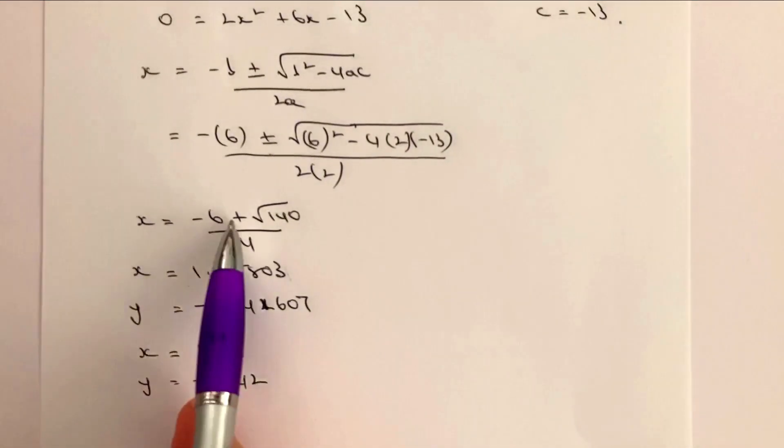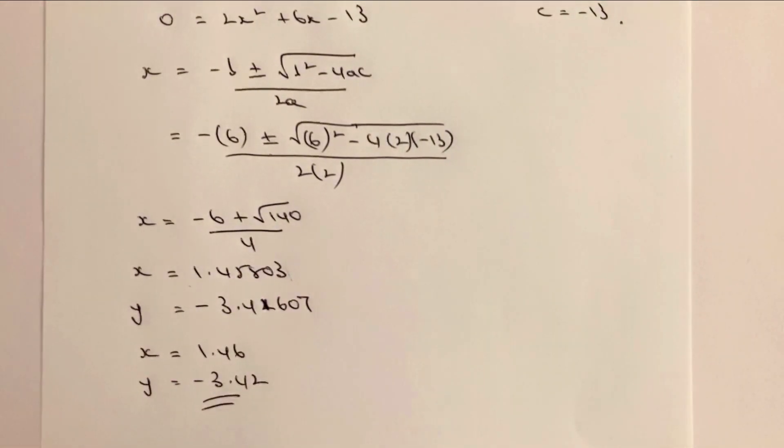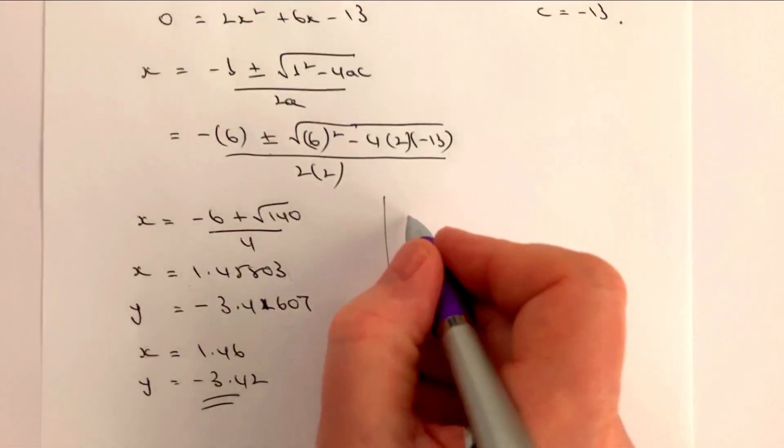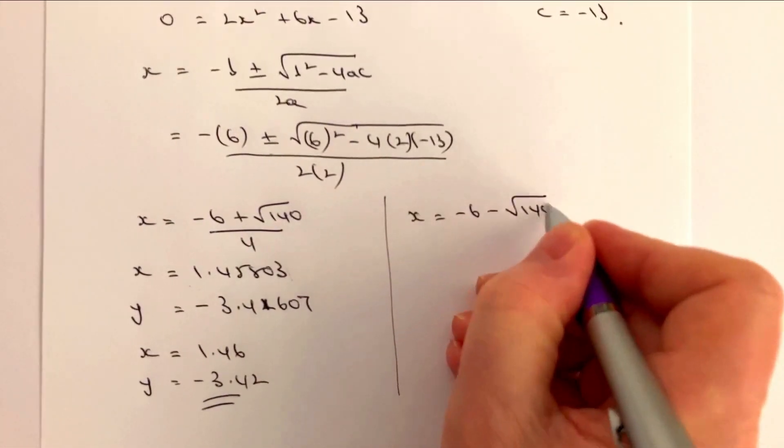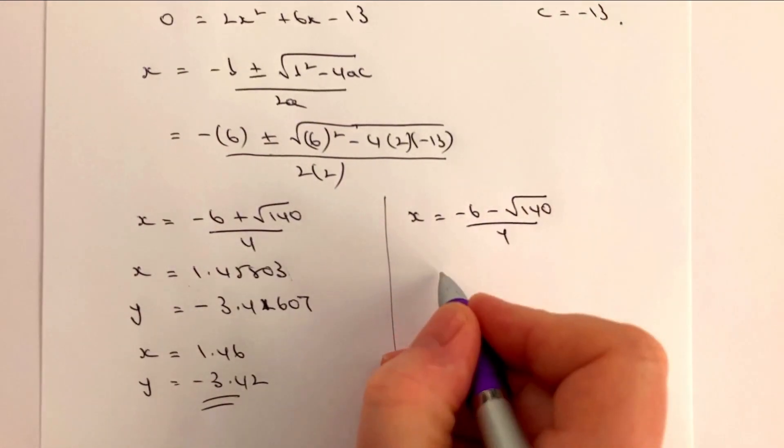Okay, so let's have a look at the case where we've got a negative value. x equals minus 6 minus the root of 140 all divided by 4.